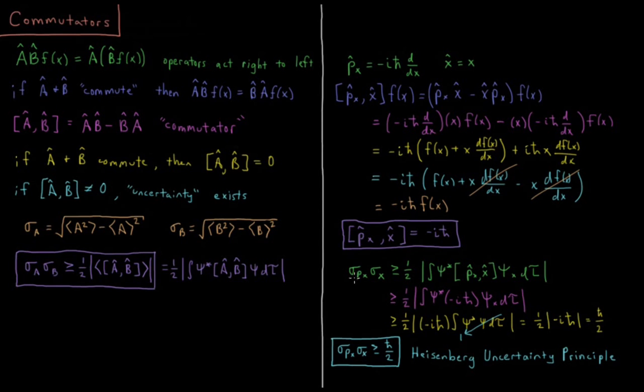All right, so let's take our integral here and see what the expectation value or what the uncertainty product between position and momentum should be. So we get the one-half absolute value of the integral of psi star commutator acting on psi over all space. Again, greater than one-half integral psi star. The commutator is minus i h bar psi d tau.